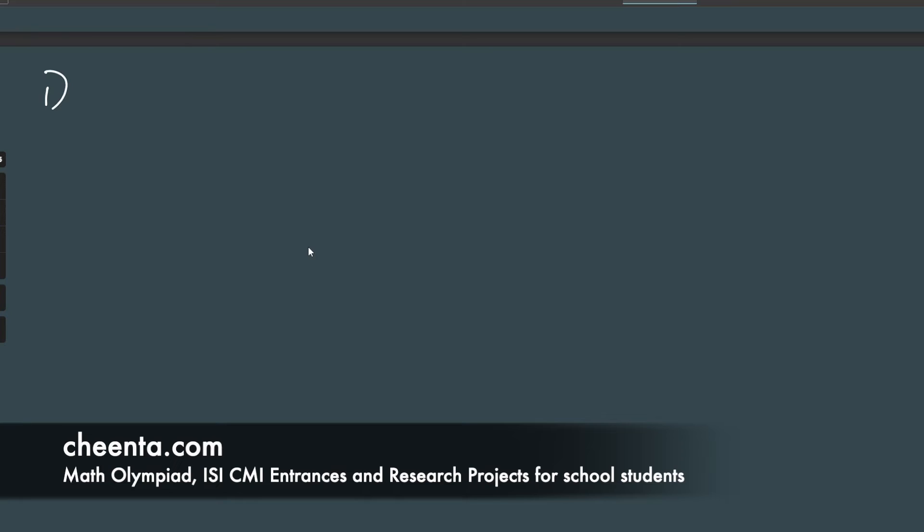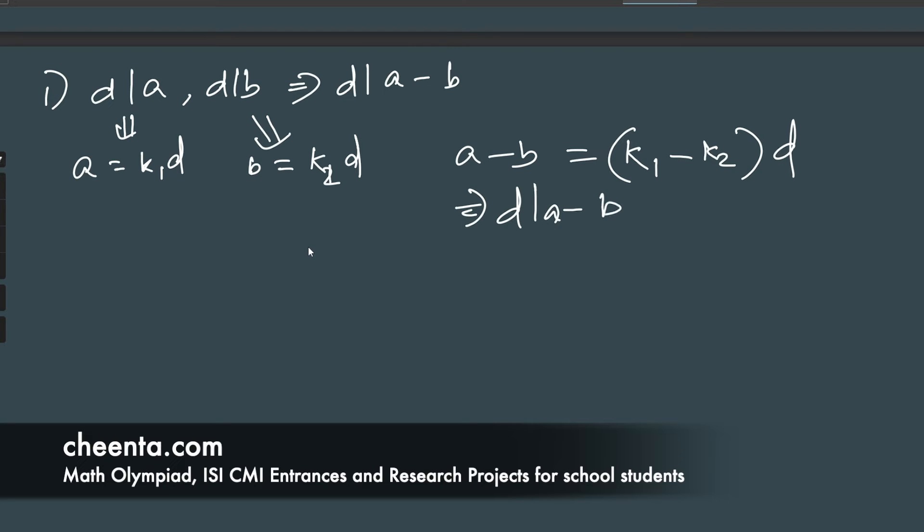We'll state a corollary of just general number theory that goes into the proof of Euclid's division algorithm. If d divides a and d divides b for some integers a and b, then d must divide the difference. Why is that? If d divides a, then a must be some multiple of d, say k1d. If d divides b, then b must be some multiple of d, say k2d. And what is a minus b? a minus b is equal to k1 minus k2, all multiplied by d. And that implies that d divides a minus b. Not all that remarkable, but still very useful.